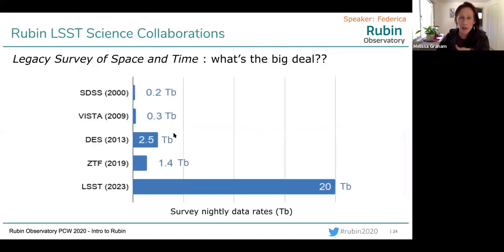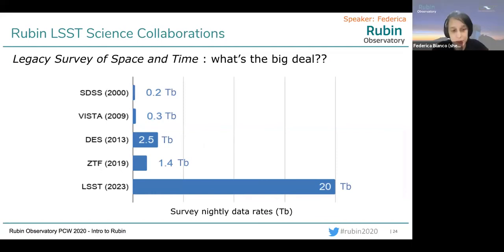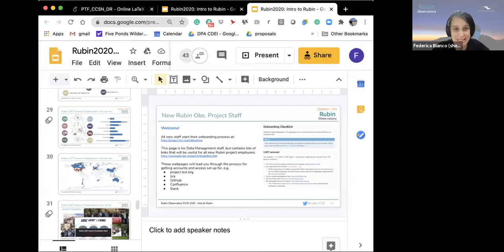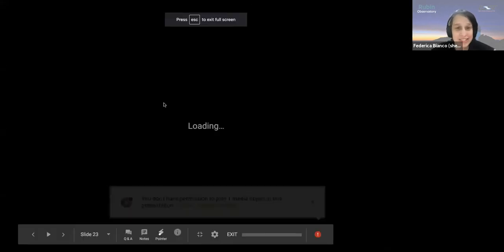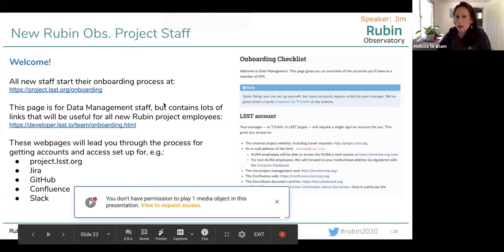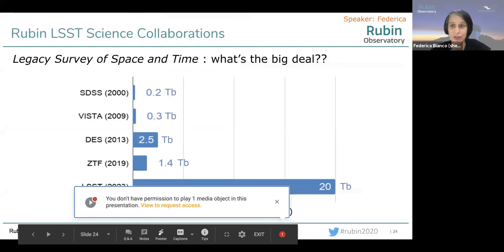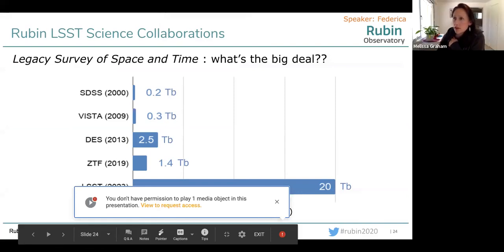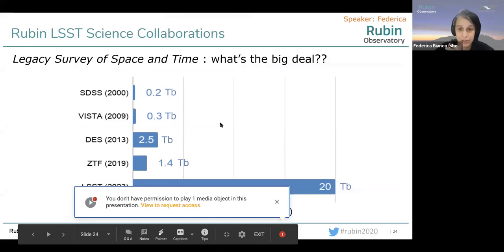The next section is about the Rubin Science Collaborations. I'm Federica Bianco, Science Collaborations Coordinator for the Rubin LSST Science Collaborations, as well as co-chair of the Transient and Variable Stars Science Collaboration. To put the science collaborations in context: Rubin will produce a transformational volume of data — 10 times as much as even the most data-productive surveys today, 20 terabytes every night for 10 years. Even the most ambitious precursor survey, the Dark Energy Survey, produces about 10 times less data per night.